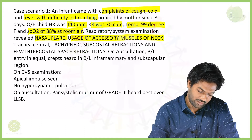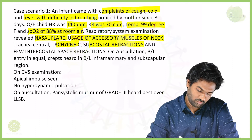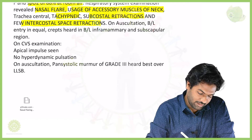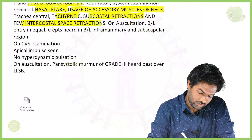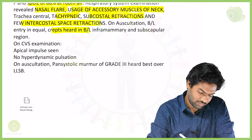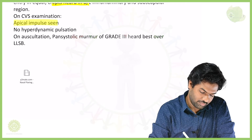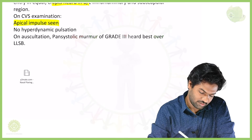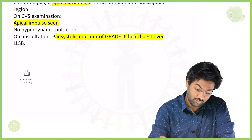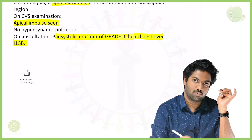Respiratory system examination revealed nasal flaring, usage of accessory muscles of the neck, trachea being central, tachypneic, subcostal retractions with few intercostal retractions. On auscultation, bilateral air entry is equal; crepts were heard in the bilateral inframammary and subscapular regions. On CVS examination, apical impulse was seen, no hyperdynamic pulsation. On auscultation, a pan-systolic murmur of grade 3 was noted, best heard over the LLSB — left lower sternal border.